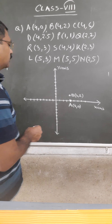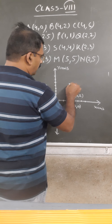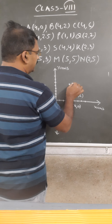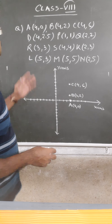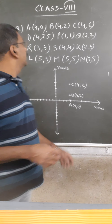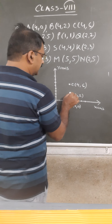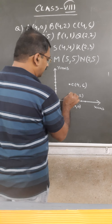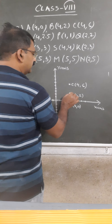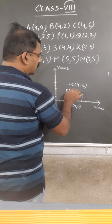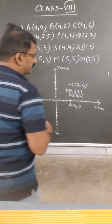Then C is (4, 6). So at x equals 4, we go up to 6 on the y-axis — this is point C at (4, 6). Now point D is (4, 2.5). Since 2.5 is in between 2 and 3, at the midpoint of 2 and 3, we plot D at (4, 2.5). So we have plotted all four points A, B, C, and D.